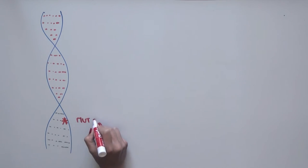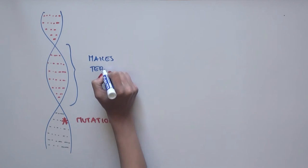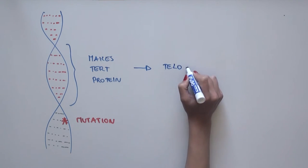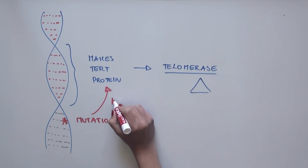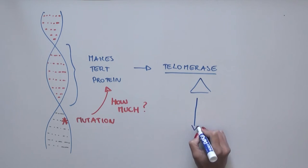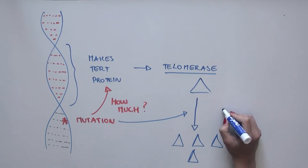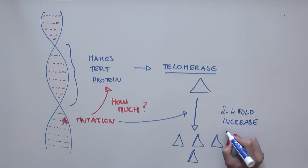Well, this mutation is present near a piece of DNA that encodes a protein which makes telomerase. The mutation controls how much telomerase is produced, and causes a 2 to 4 fold increase in the levels of telomerase in cells.